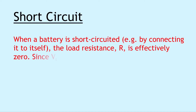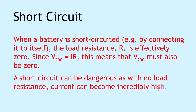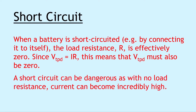Short circuit is our next one, and this says that when a battery is short circuited — for example by connecting it to itself — the load resistance R is effectively zero. Since the terminal potential difference V_TPD is equal to IR from Ohm's law, this means that V_TPD must also be zero. So for a short circuit you should remember that the load resistance R and the terminal potential difference V_TPD are both zero. A short circuit can be dangerous as with no load resistance current can become incredibly high. For example if you take your battery and connect it to itself, over time the battery will heat up, because there's nowhere for the electrons to deposit their energy other than the battery itself.